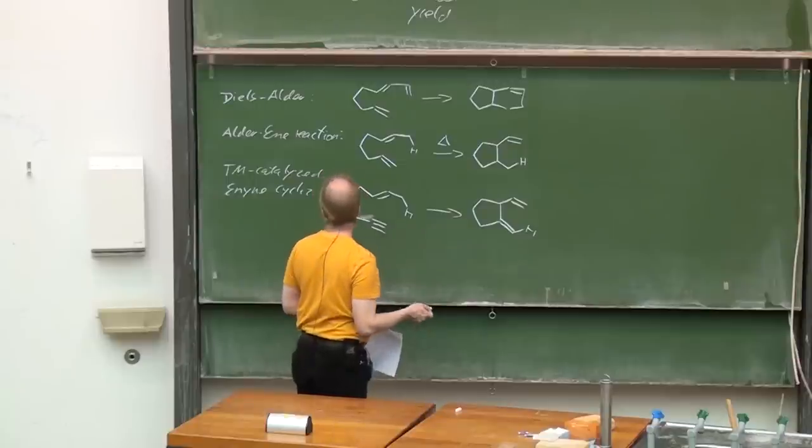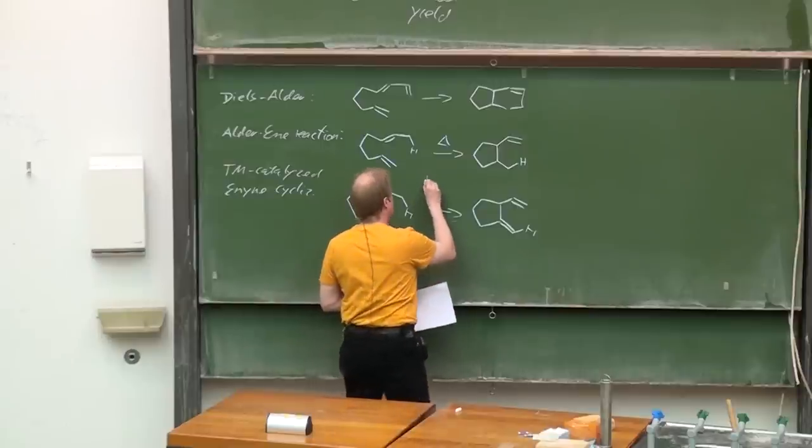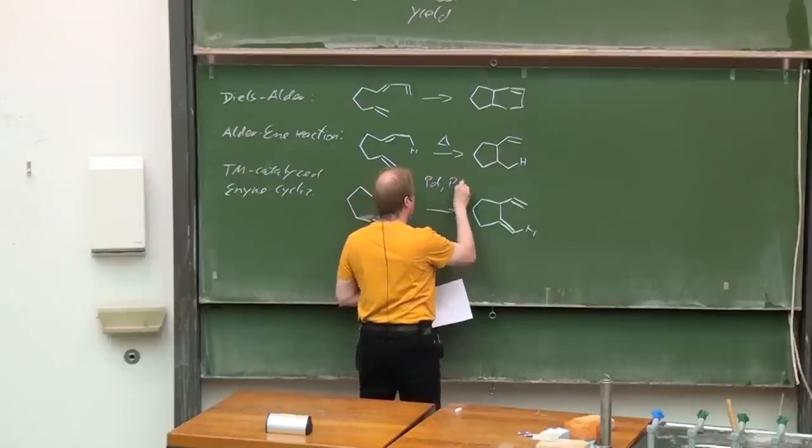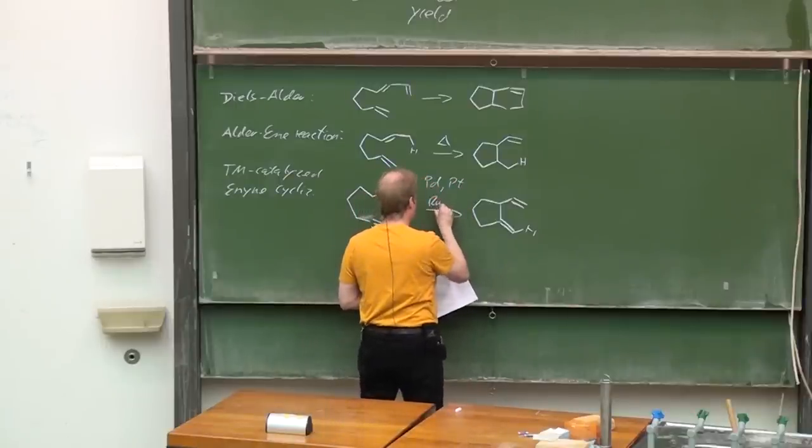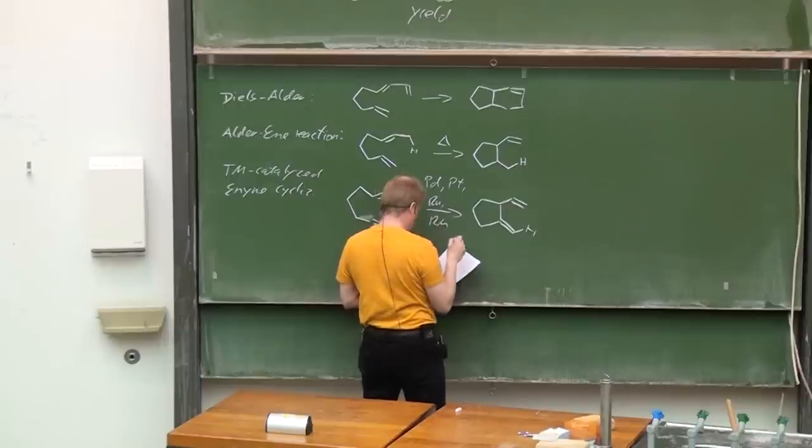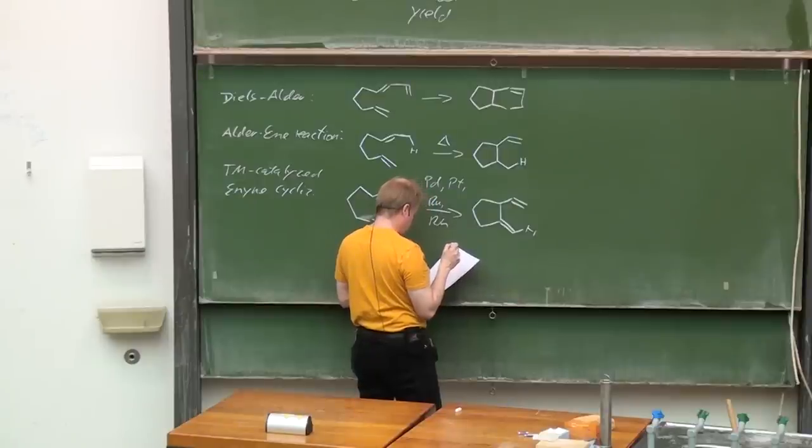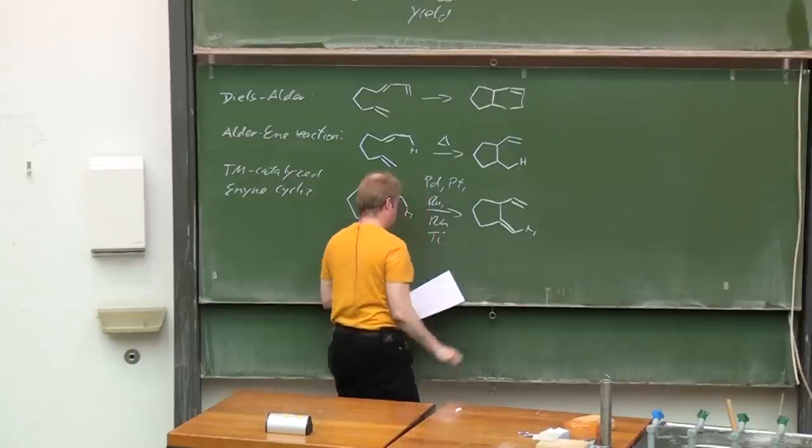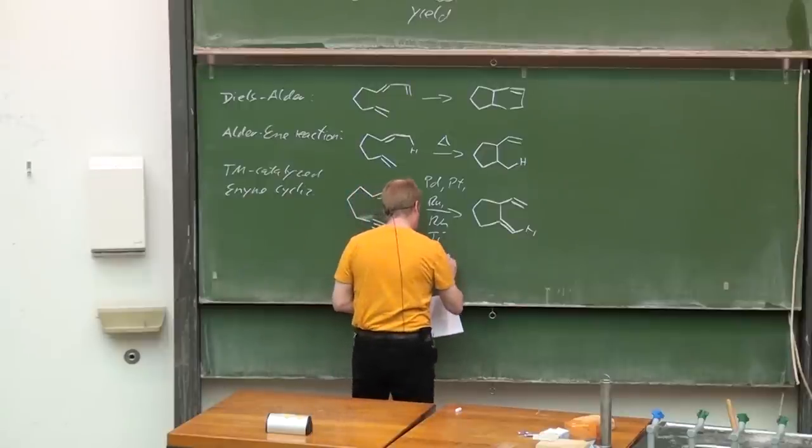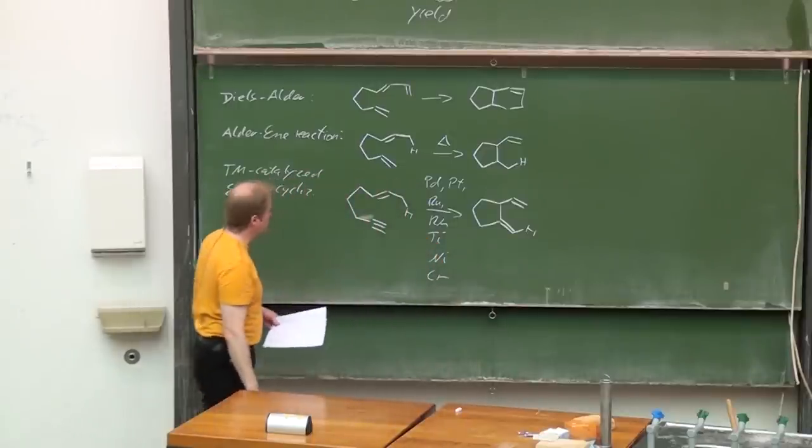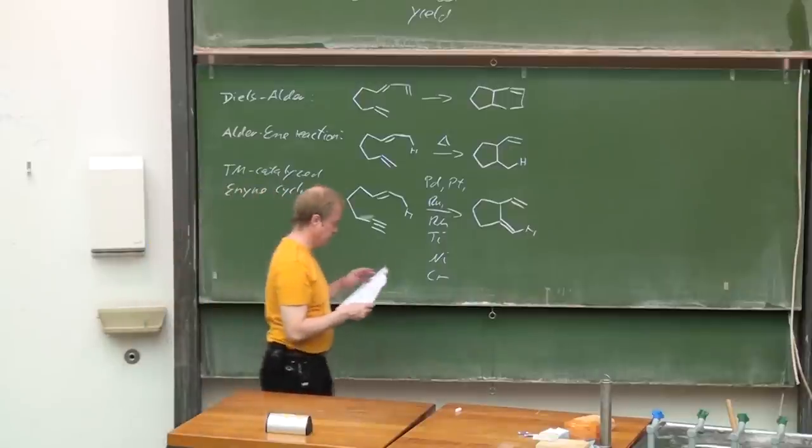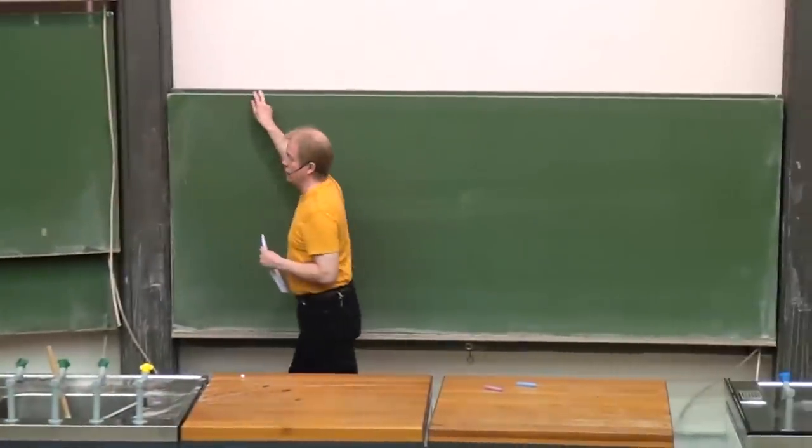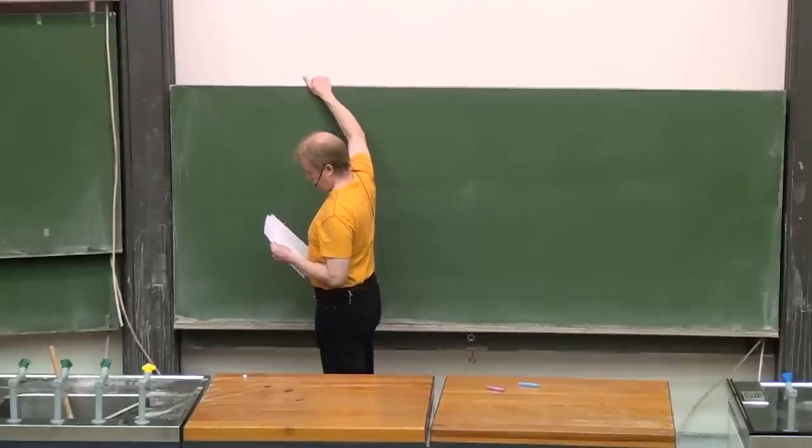Actually this type of reaction is not only catalyzed by palladium also by platinum complexes. Ruthenium, rhodium catalyzed enyne cyclizations are known as well as those based on titanium catalysis, nickel catalysis, and I think even chromium catalysis.